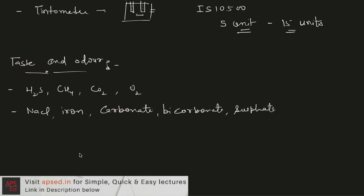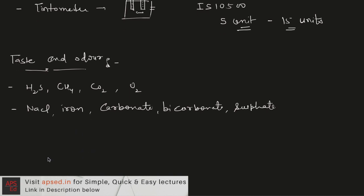So for the measurement of this taste and odor, we use something called the threshold odor number. So it is basically a dilution method. Initially, let's say we have a sample of A ml. The volume of the sample is A ml and there is taste and odor in this sample. Now in this sample, we add more water, that is distilled water. If we take the ratio here, so this dilution ratio tells the threshold odor number or TON.